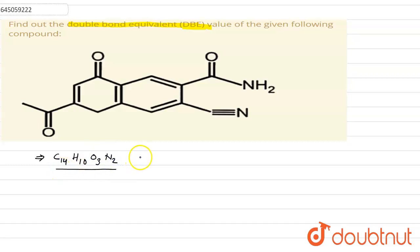And double bond equivalence for any compound can be found out by the formula: DBE equals C plus 1 minus H by 2 minus X, that is halogen by 2, plus N, that is nitrogen by 2.